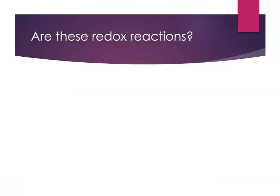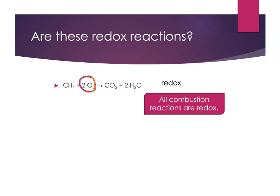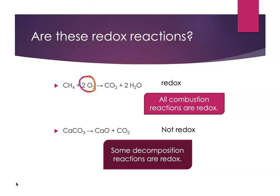A little more practice. I've got a combustion reaction: CH4 reacting with oxygen. Oxygen is an element, so even without assigning charges — and these aren't really ionic compounds — I've got elemental oxygen as a reactant, and therefore this is a redox reaction. In fact, all combustion reactions are redox reactions. Then I've got calcium carbonate decomposing to make calcium oxide and CO2. What I notice is I don't have any elemental matter as a reactant or as a product — I have a compound making two other compounds. This is not a redox reaction. Remember, not all decomposition reactions are redox. Some are — if it's a binary compound decomposing to form its elements, then it would be — but this is not an example of that.